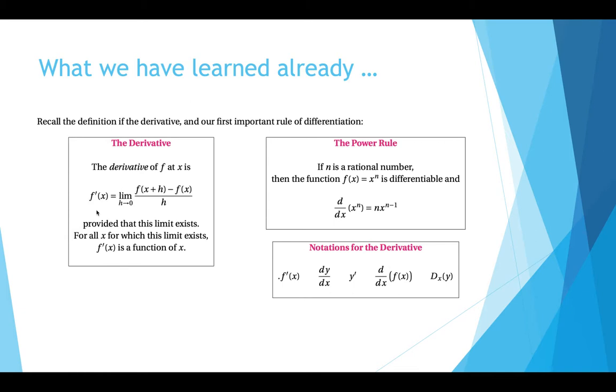We've learned the power rule. If n is a rational number, then the function f of x equals x to the n is differentiable, and d dx x to the n is n times x to the n minus 1.